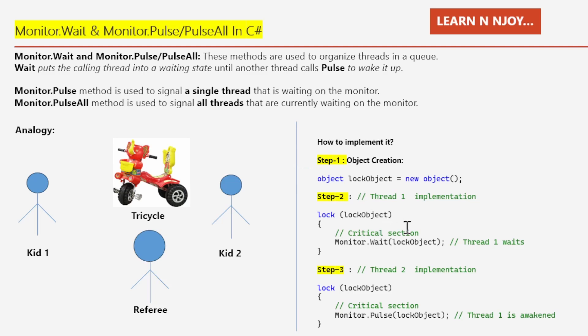Step two: implementing Thread One. We write lock(lockObject) to ensure only one thread at a time can enter the critical section, preventing multiple threads from accessing it simultaneously. Inside the lock block, we write Monitor.Wait(lockObject). This causes Thread One to release the lock and wait for another thread to send a pulse signal before it can continue.